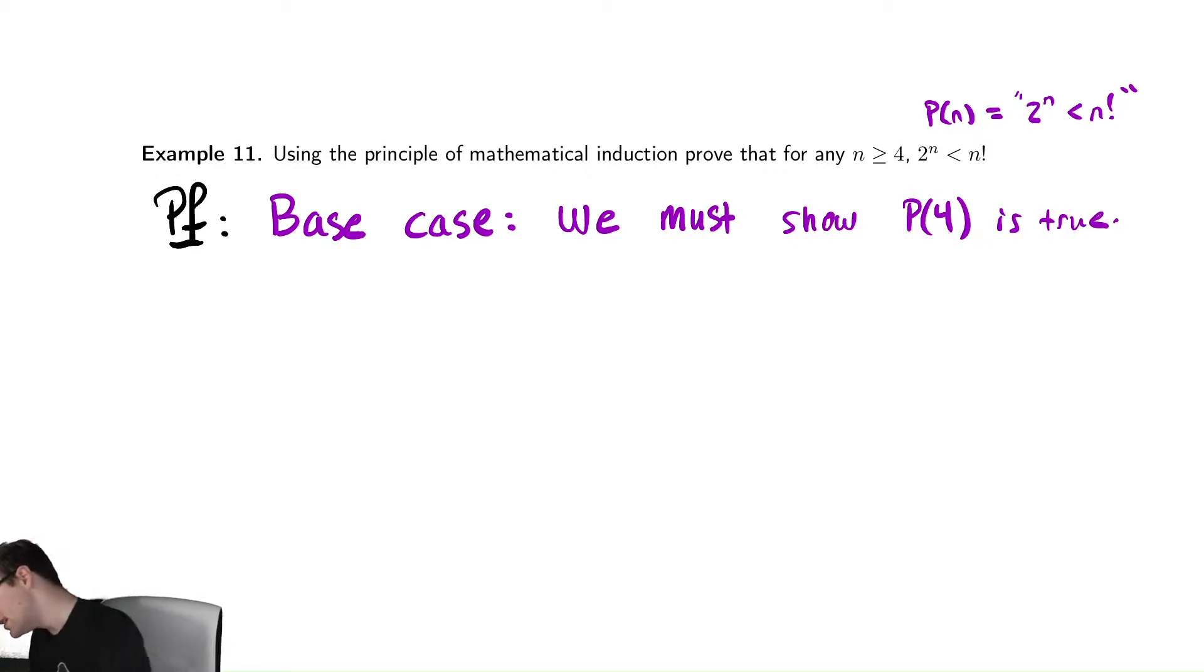In this case, that means we must show that 2^4, which is less than 4 factorial. Hopefully you remember the factorial function. The factorial function says multiply the numbers starting with the thing inside of the factorial down to 1. So 4 factorial is 4 times 3 times 2 times 1, that's 24. The left hand side is 16, and it is the case that 16 is less than 24. So P(4) holds.